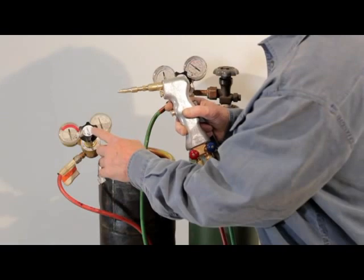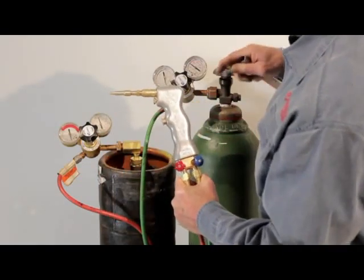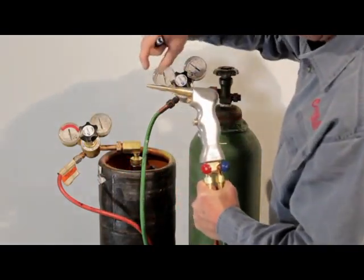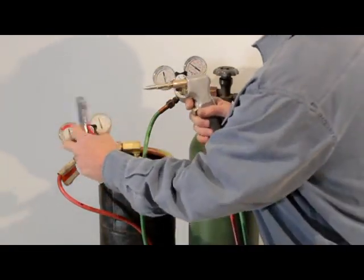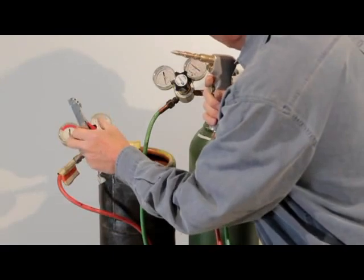We're going to light it, go to four pounds, then we're going to come over here to the oxygen and start turning it in until we get a neutral flame right here. So we'll turn the acetylene in, listening for a little bit of flow coming out of the gun.